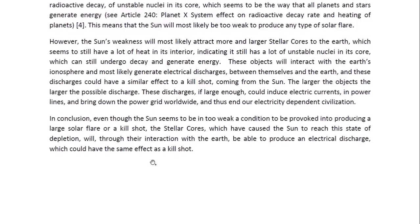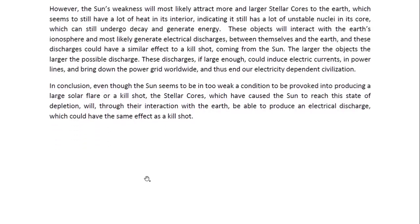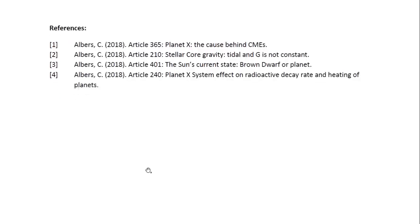In conclusion, even though the sun seems to be in too weak a condition to be provoked into producing a large solar flare or a kill shot, the stellar cores which have caused the sun to reach this stage of depletion will, through their interaction with the Earth, be able to produce an electrical discharge which could have the same effect as a kill shot. And these are the references. This is Dr. Claudia Albers, Planet X physicist. Thank you for watching.